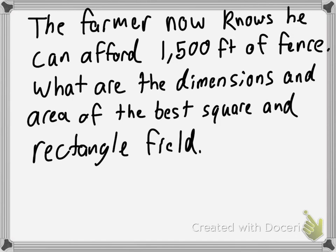Okay. Our last example, where we extend area. The farmer now knows he can afford 1,500 feet of fence. So, we're establishing this is how much we have. What are the dimensions and area of the best square and rectangle field? So, what you need to do is you need to take that 1,500 feet, and you need to play with it by creating a square and a rectangle that's going to maximize the area. Then, I want you to write down what the dimensions are and the area of each of those figures. So, go ahead and pause the video and try that with your group.